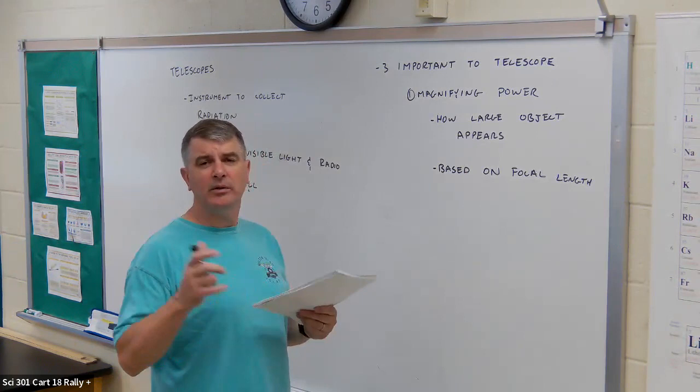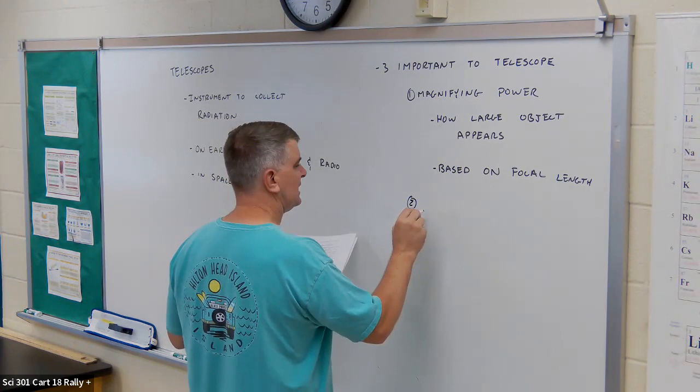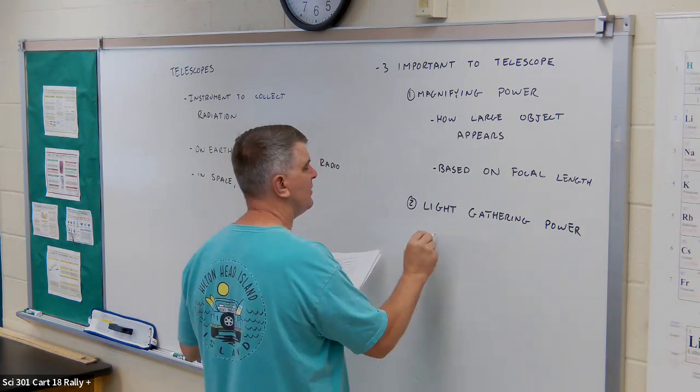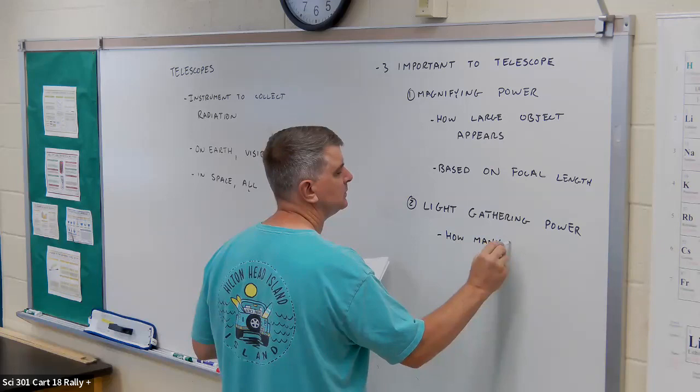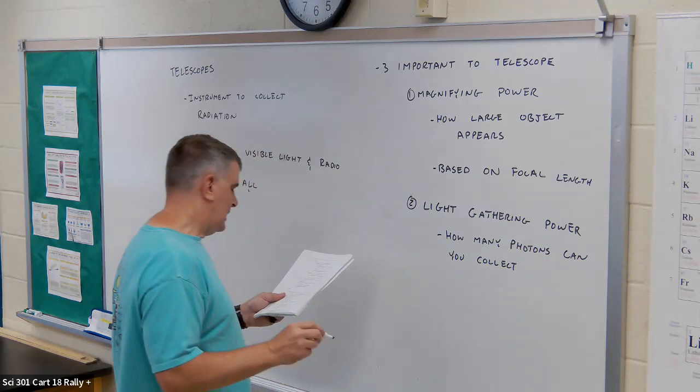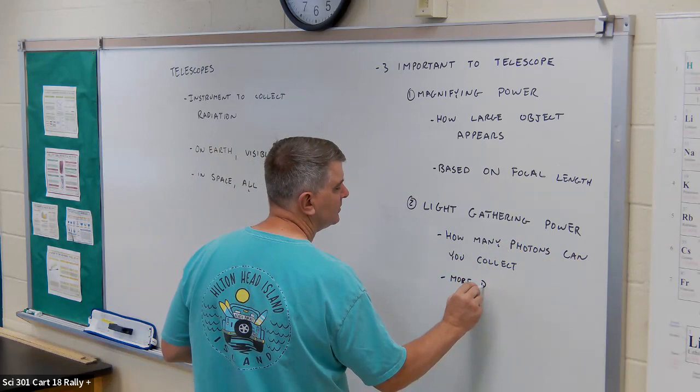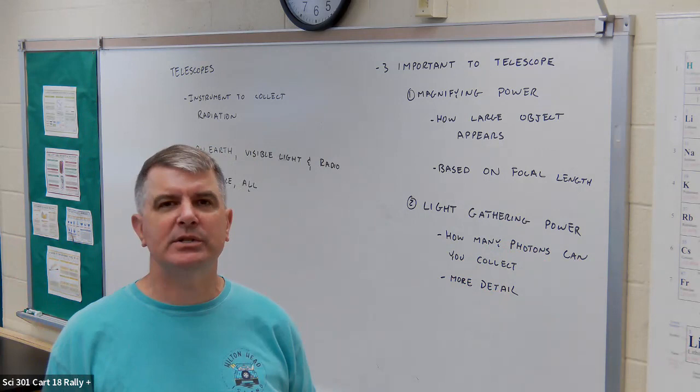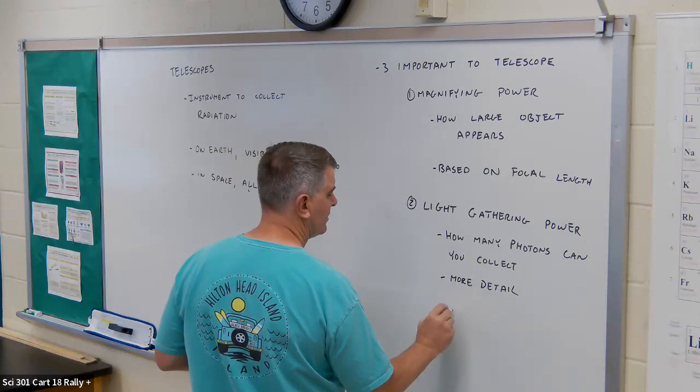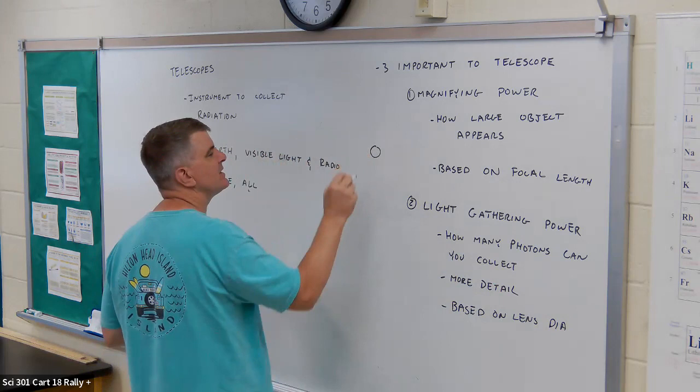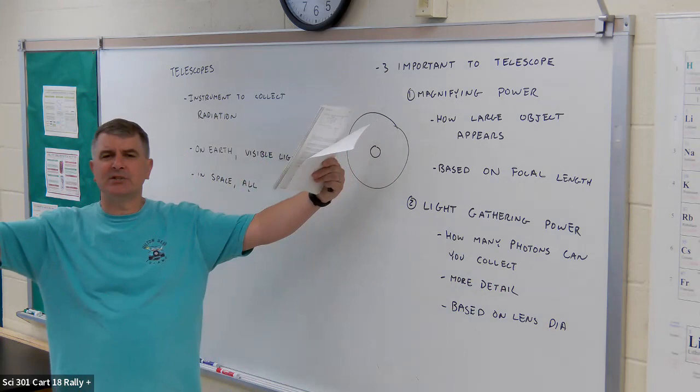So the second is light gathering power. And this is basically just how many photons you collect. And this is going to give you more detail. The more photons I can collect, I mean, think about pixels on your TV screen or whatever. The more pixels you have, the more tiny little dots, the clearer your image appears. So if I can, and this is based on the diameter, based on lens diameter.